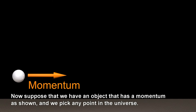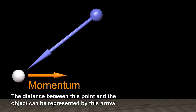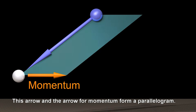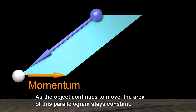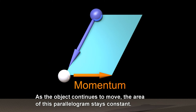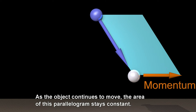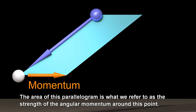Now suppose that we have an object that has a momentum as shown, and we pick any point in the universe. The distance between this point and the object can be represented by this arrow. This arrow and the arrow for momentum form a parallelogram. As the object continues to move, the area of this parallelogram stays constant. The area of this parallelogram is what we refer to as the strength of the angular momentum around this point.